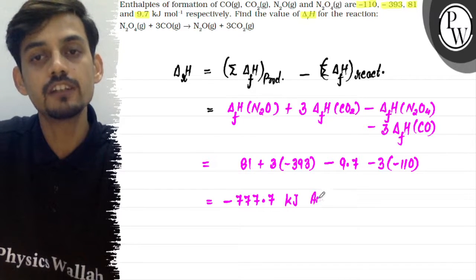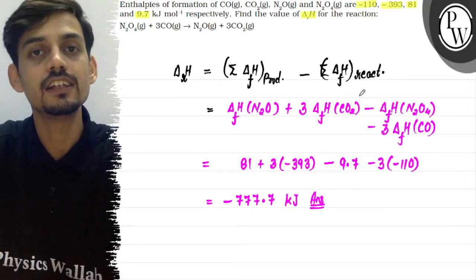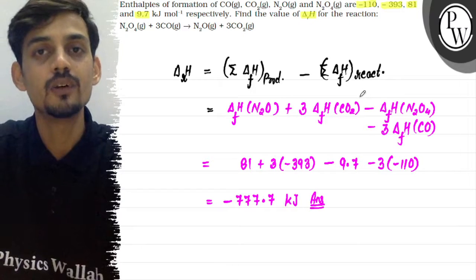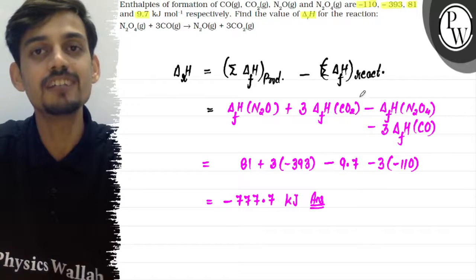So, minus 777.7 kJ will be the answer for the enthalpy of the given reaction. Hope this clears the question. All the very best.